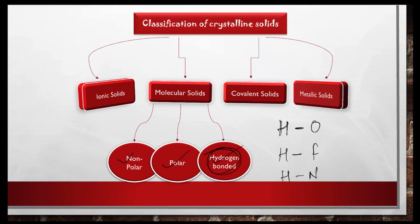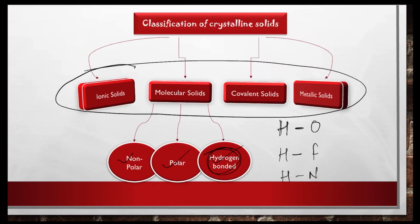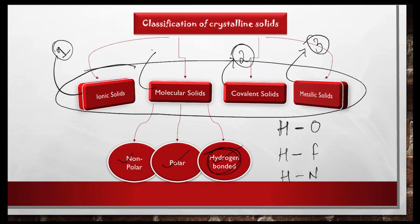The third type is hydrogen-bonded molecular solids, formed when hydrogen is bonded to oxygen, fluorine, or nitrogen. Hydrogen bonding is the strongest among the three sub-types. Among all crystalline solids, the order of strength of force of attraction is: ionic solids (strongest), then covalent solids, then metallic solids, and then molecular solids (weakest).